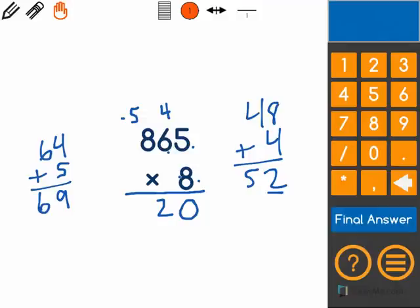And since this is the last digit that we will be multiplying, we write 69, and then we count back to find where our comma goes. The correct answer is 6,920.